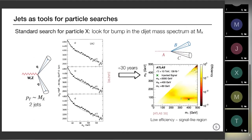Now that we more or less know what a jet is — both in theory and in experiment — we can start using them to learn something about physics. One way to use them as a tool is to search for new particles. Imagine you have a resonance X that decays hadronically to qq-bar, and this qq-bar will emerge in your calorimeter as a couple of objects. What you would do is reconstruct the dijet mass spectrum and look for a bump at the mass of the resonance.